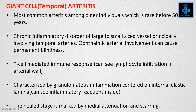Giant cell arteritis is the most common vasculitis among older individuals and is rare before 50 years. It is a chronic inflammatory disorder of large to small sized vessels, principally involving the temporal arteries. Ophthalmic arterial involvement can cause permanent blindness. It is a T cell-mediated immune response with lymphocyte infiltration in the arterial wall, characterized by granulomatous inflammation centered on the internal elastic lamina. The healed stage is marked by medial attenuation and scarring.